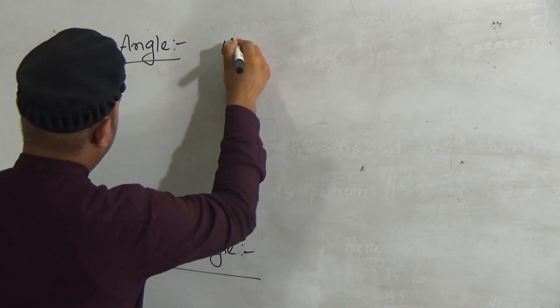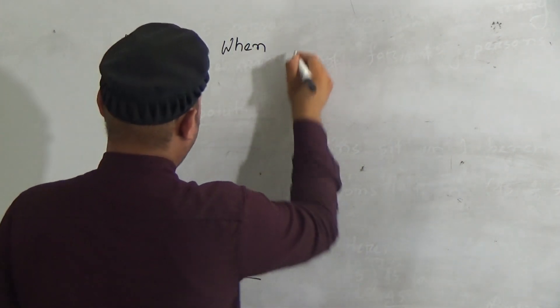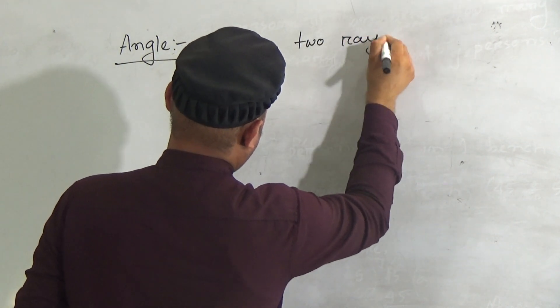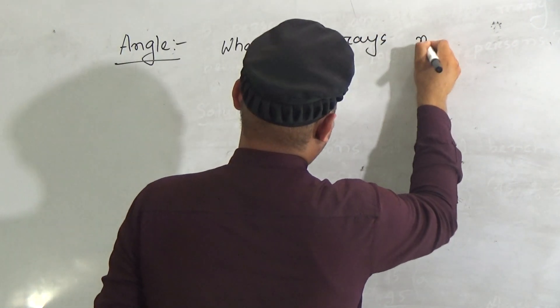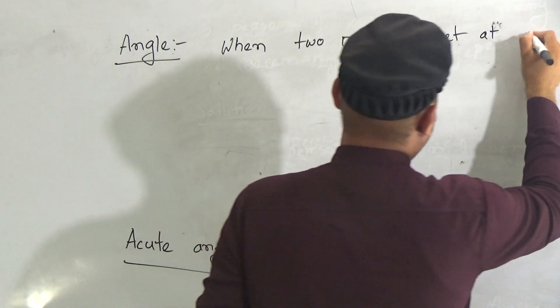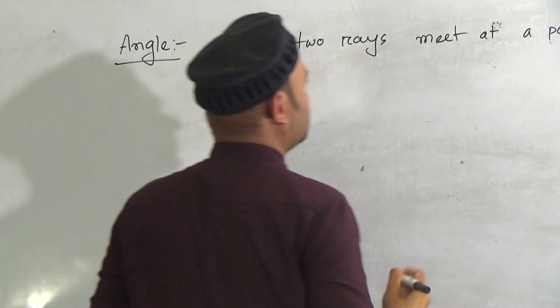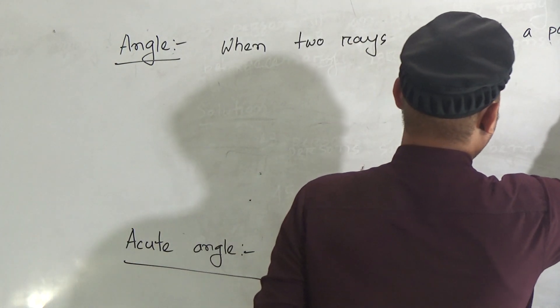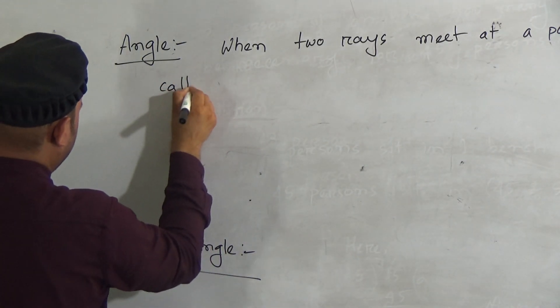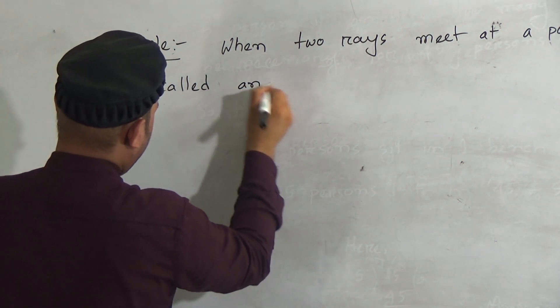Now write the definition of angle: when two rays meet at a point, it is called an angle.